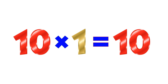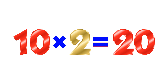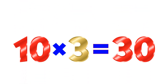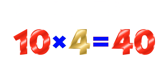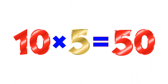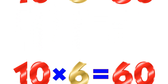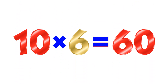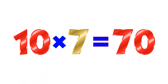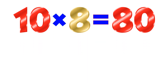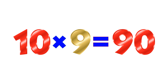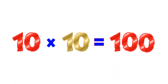Table of 10. 10×1=10. 10×2=20. 10×3=30. 10×4=40. 10×5=50. 10×6=60. 10×7=70. 10×8=80. 10×9=90. 10×10=100.